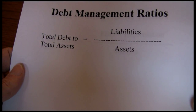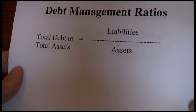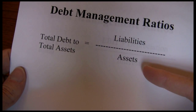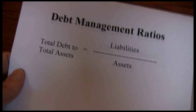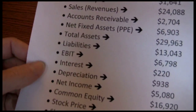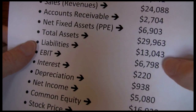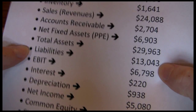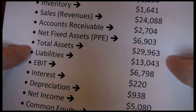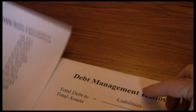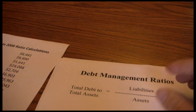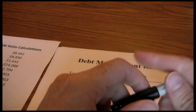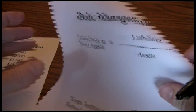Let's start with the total debt to total assets. As the name implies, it looks at our liabilities, which are debts, divided by our assets. So from the balance sheet, we need our total liabilities and total assets. We have our total liabilities at $13,043 and our total assets at $29,963. The idea is the more debt we have relative to our assets, the more risk we've got.